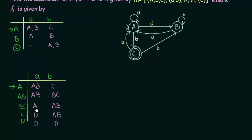Now my table is complete. But we need to identify the final states. In the NFA, C was the final state. So in the DFA, all states that contain C must be marked as final states. Looking at our states, BC contains C, and the state C itself contains C. So both BC and C are the final states, and I will put circles around both of them.